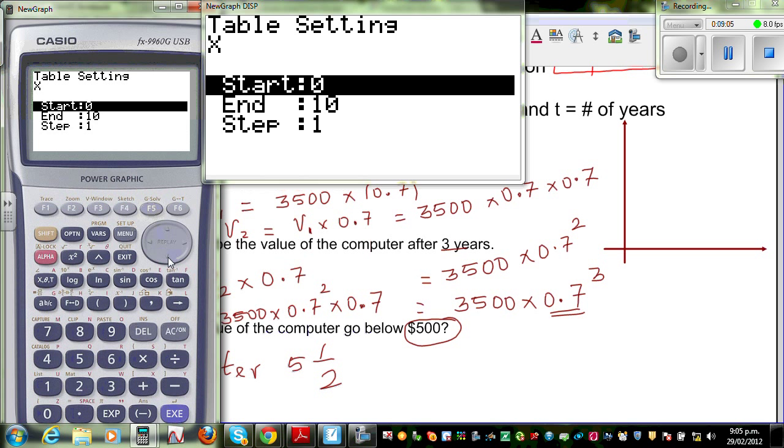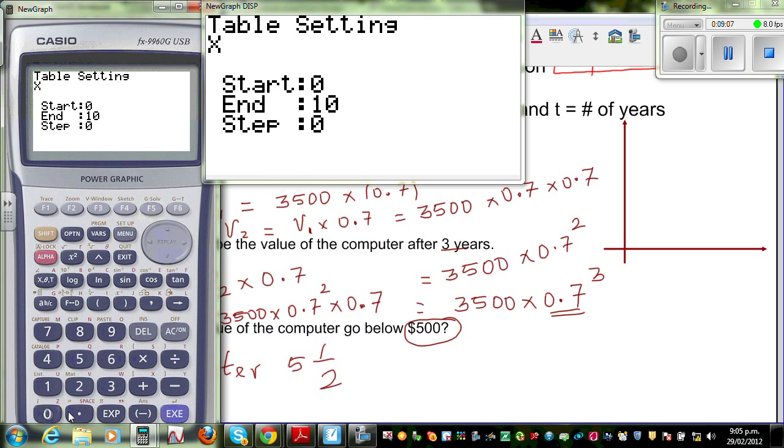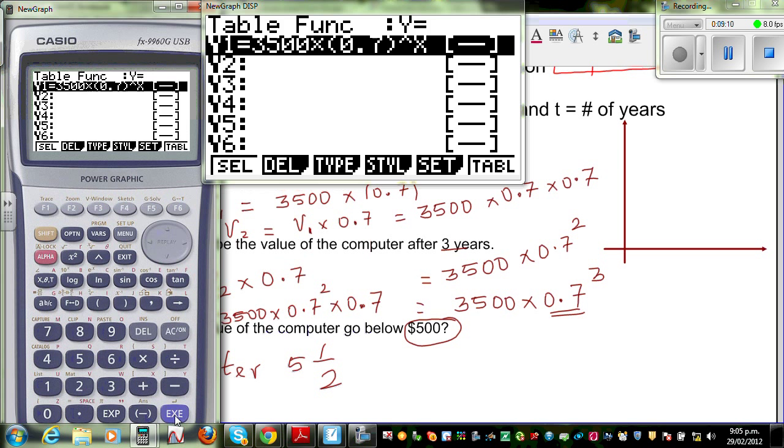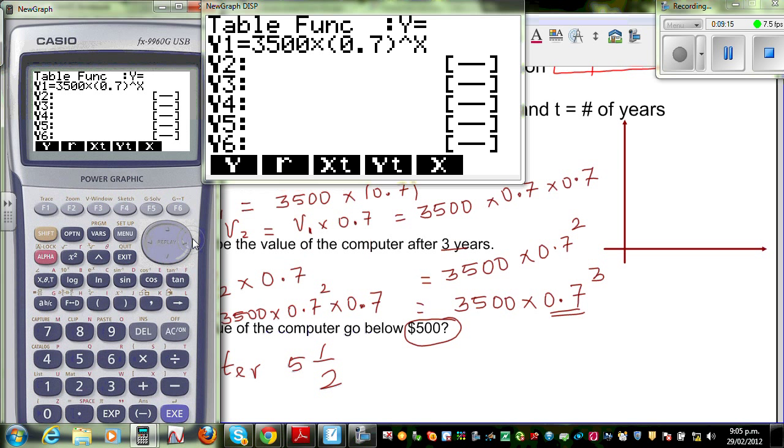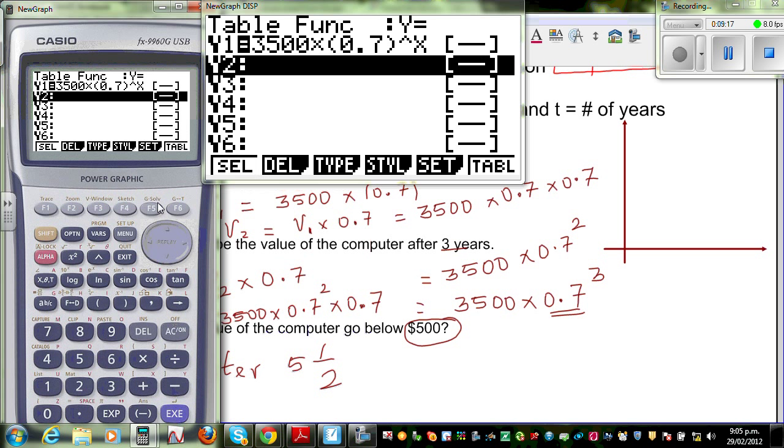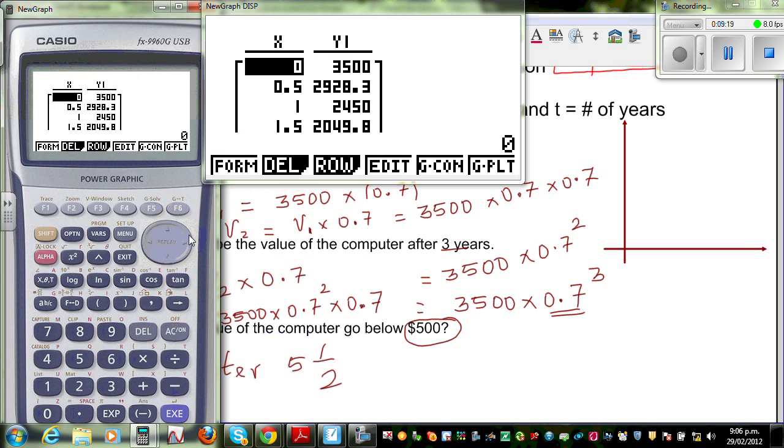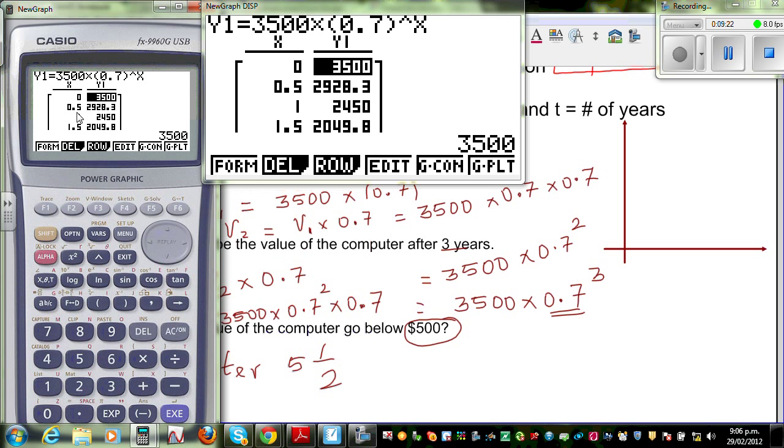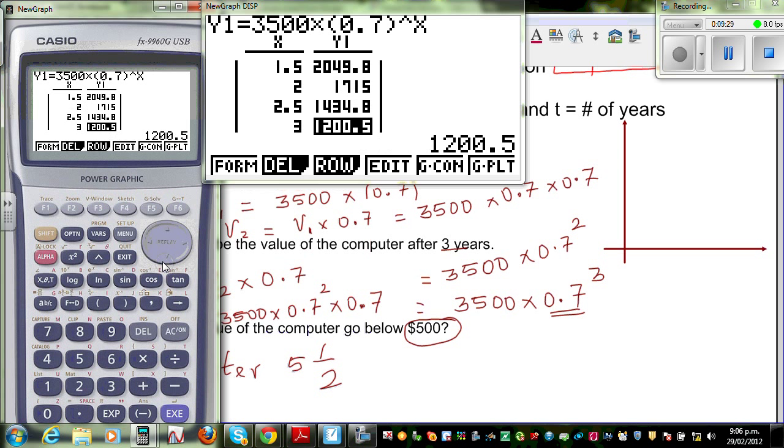If you go to table, set 0 to 10 at a scale of 0.4. I have to scroll like this. And draw table. So, when it is 0 years, it is 3000. So, after 6 months, it is 2928.83 and so on. So, let me go at 5.5 years. So, when it is 5.5 years, it is 492.16. This is below $500.